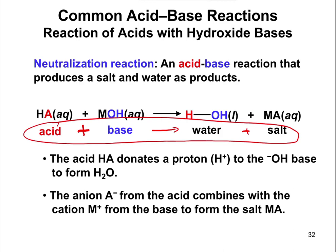The idea here is that the acid donates the proton to the OH, which is most commonly going to be there with the base. So the acid donates the proton to the OH, and that forms water — that's where the HOH comes from. And then the salt is going to be this MA, where M stands for metal and A stands for an anion. That's the generic writing of this.